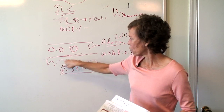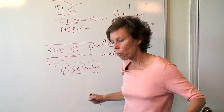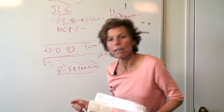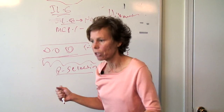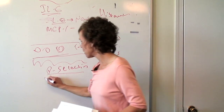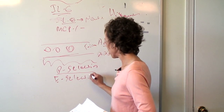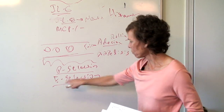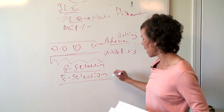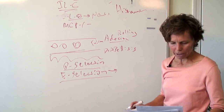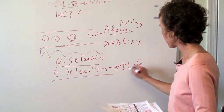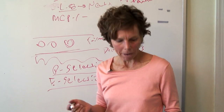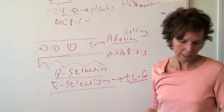P-selectin gets translocated to a surface where one of your immune cells — like your neutrophils or macrophages — can then roll to that. So they're flying by and they're just going to sort of roll. Then you have E-selectin — that's another rolling molecule. E-selectin is going to be increased by the expression of IL-6. You get IL-6 from the macrophage, and you could also get it from Th2 cytokines, but think of it as coming from the macrophage.